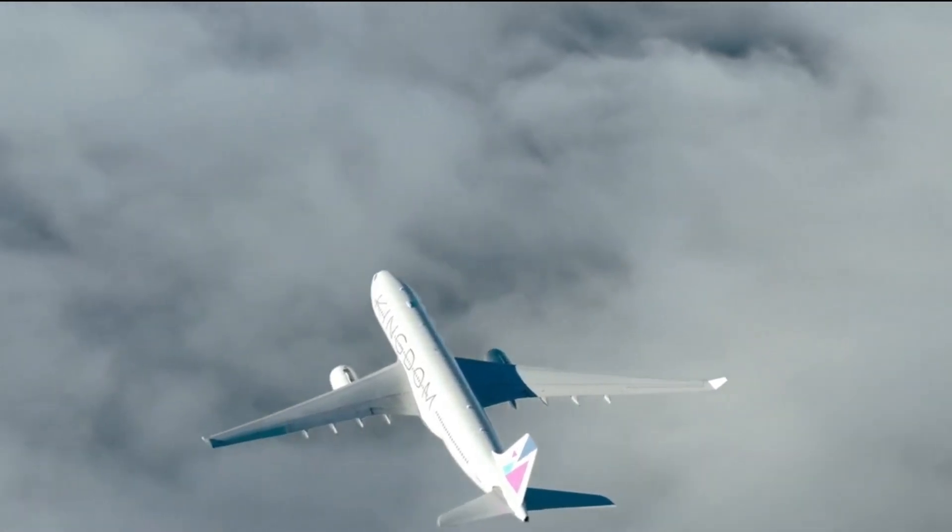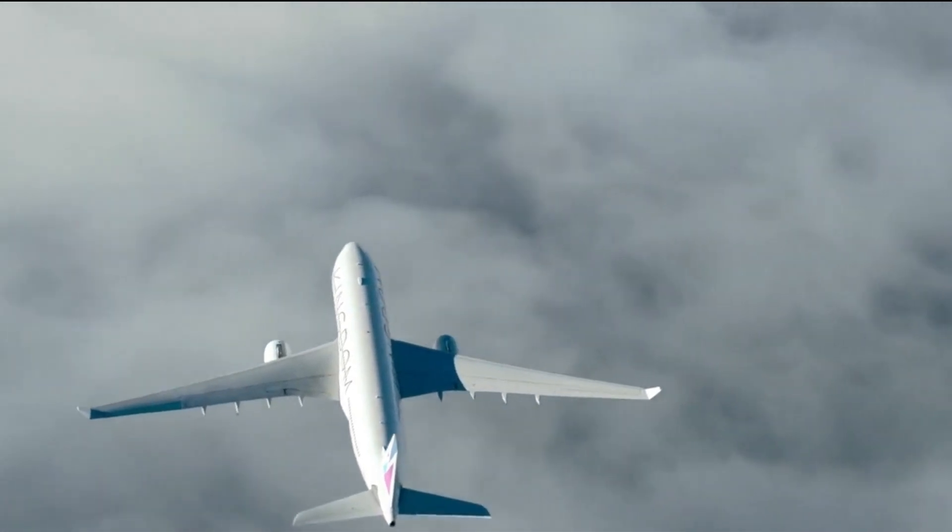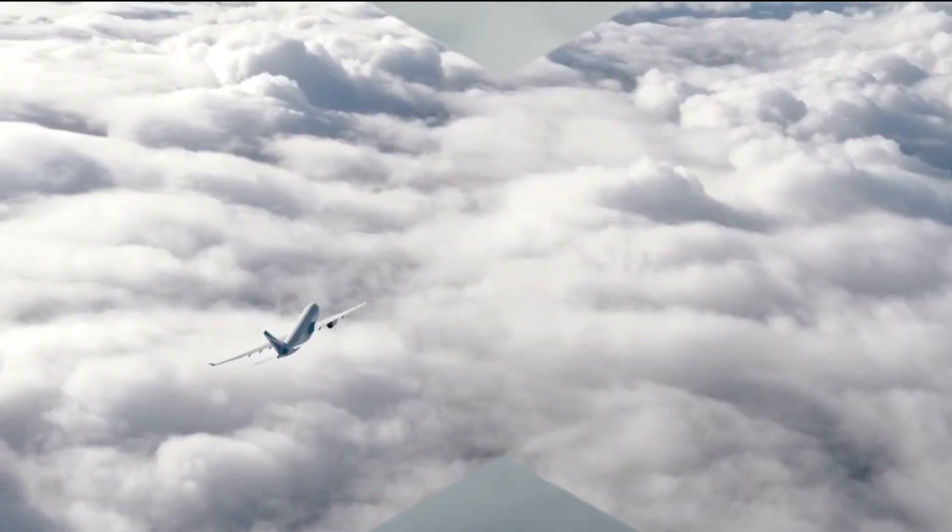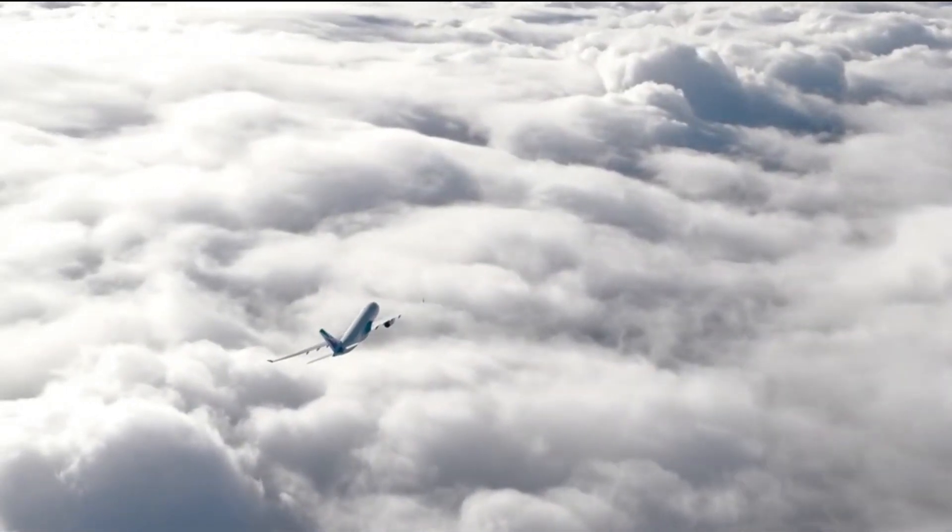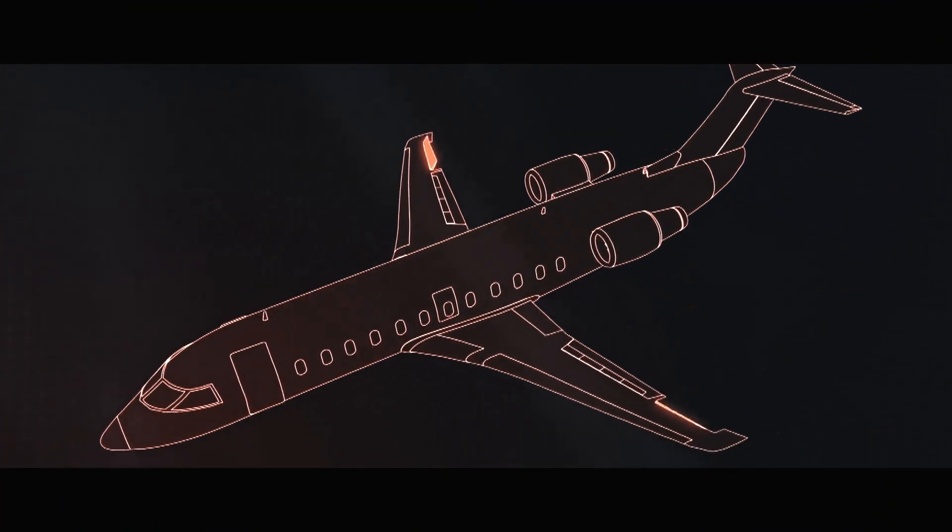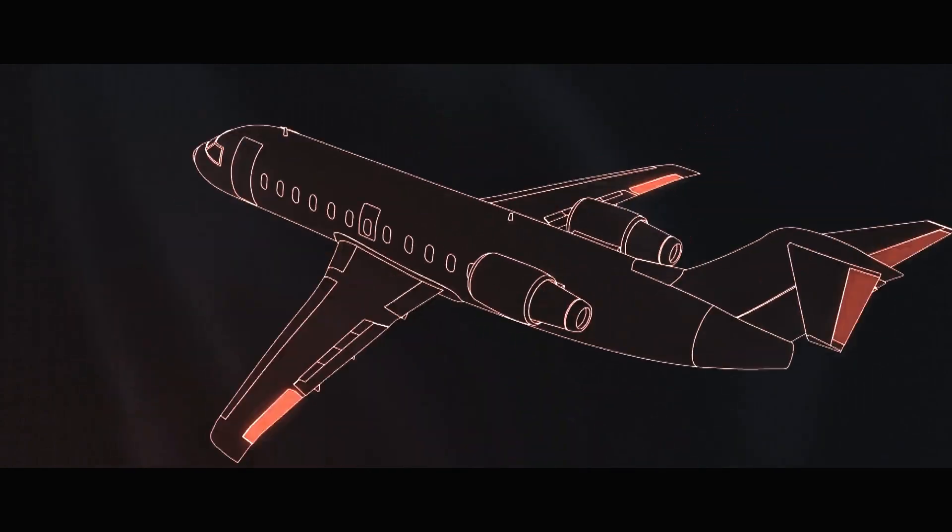In this video, we're taking a closer look at secondary flight control surfaces, the crucial yet often overlooked systems that fine-tune an aircraft's performance, ensuring safe and efficient flight operations. Unlike primary controls which handle basic movements like pitch, yaw, and roll,